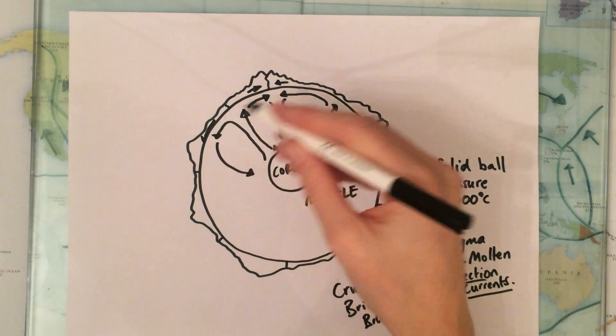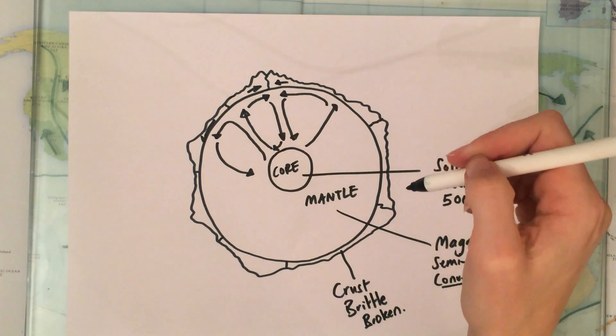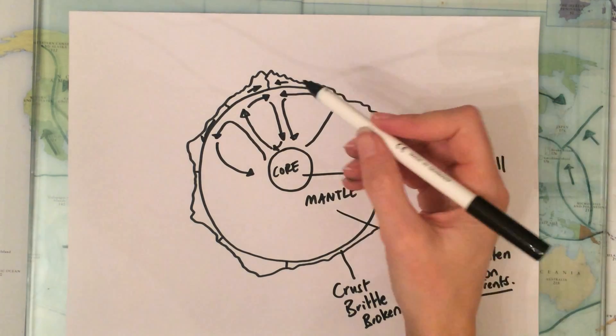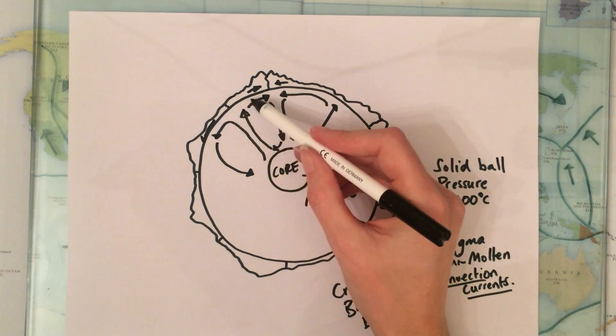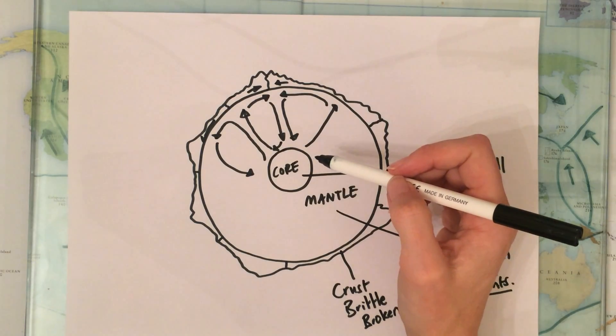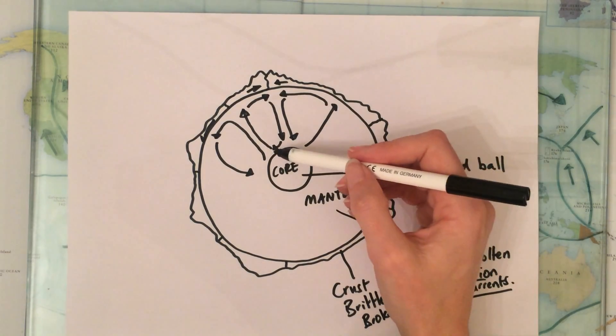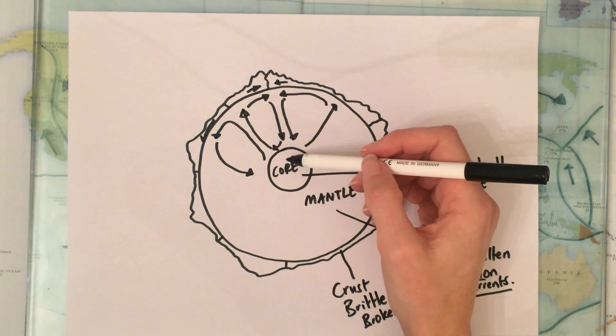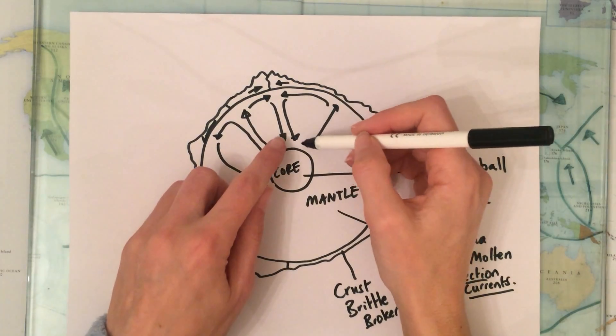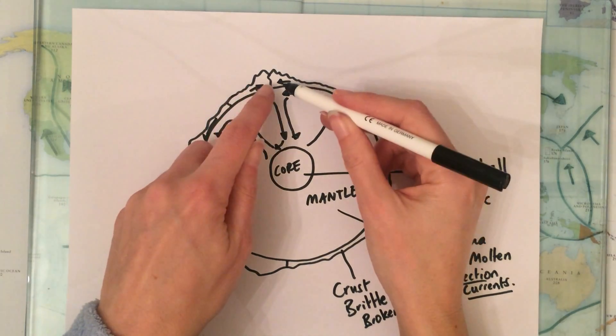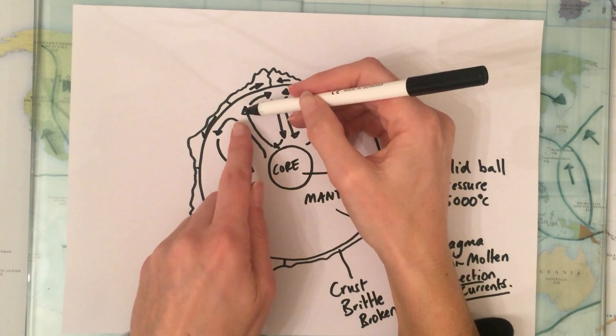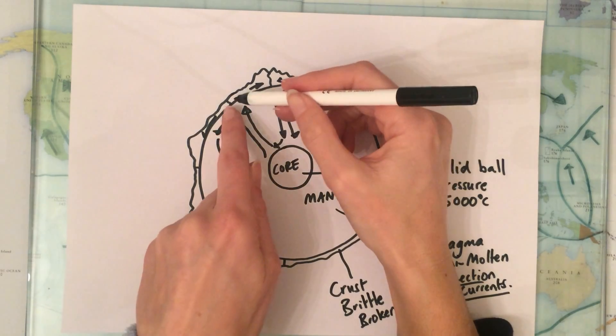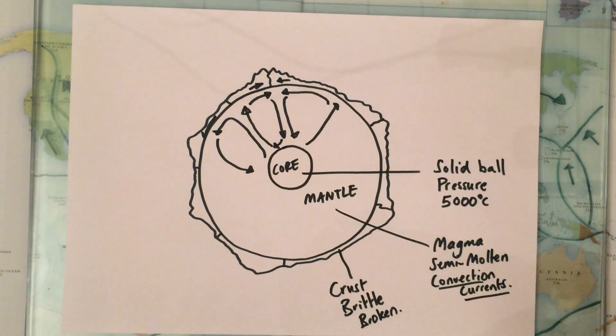So plate tectonic theory is that the earth's crust is broken into pieces and those pieces are called tectonic plates and they float on the earth's mantle and they move around due to convection currents in the mantle. And where the convection currents come together the plates move together, where the convection currents move apart the plates move apart.